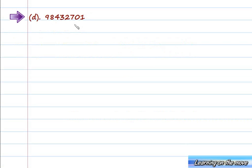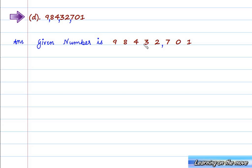The next number is Part D: 98432701. Putting the commas — the first comma comes after the first three digits from the right, and subsequent commas are after every two digits from the right. The place values are: units, tens, hundreds, thousand, ten thousand, lakh, ten lakh, and crore.